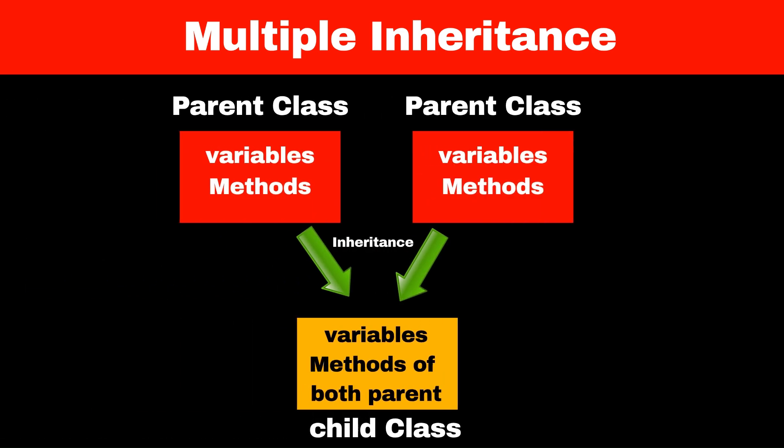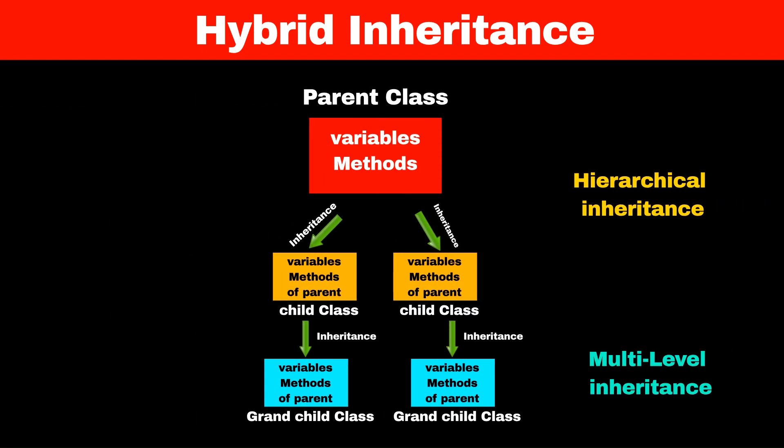The next type of inheritance is multiple inheritance. In this type, one child class can have multiple parent classes and can access methods and variables of both parent classes. This type of inheritance is not allowed in Java using classes, but we can achieve it using interfaces, which we will see in the next video. The last type is hybrid inheritance, which is a combination of two or more types of inheritance. The example on the screen is a combination of multilevel and hierarchical inheritance. That's it for today's video.